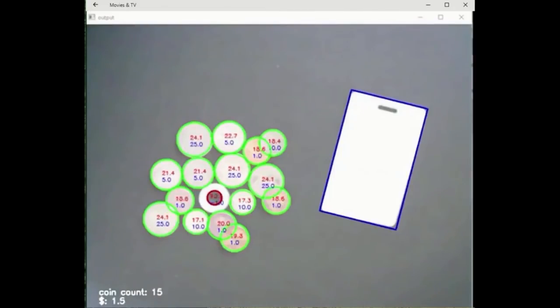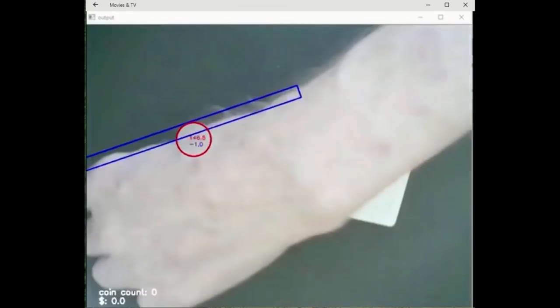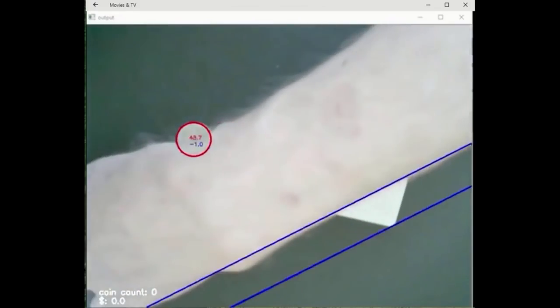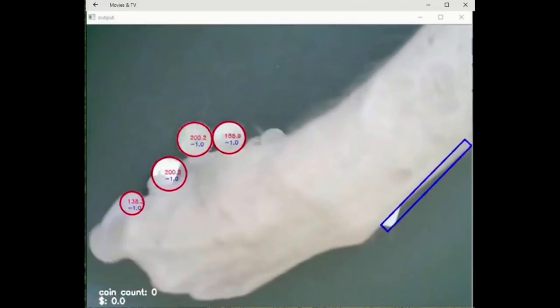Future work would be to adapt this to an Android phone with a higher resolution and use still shots. With higher resolution, we might also be able to identify features embossed on the coins to discern real versus bogus coins.